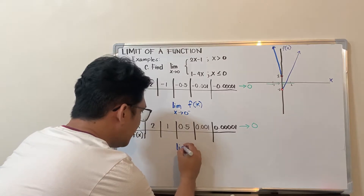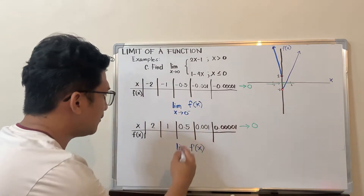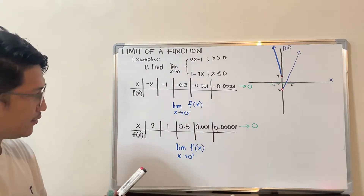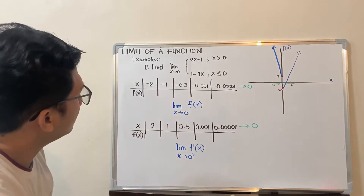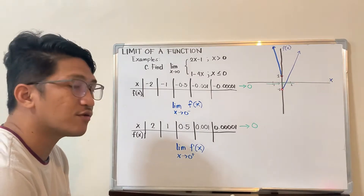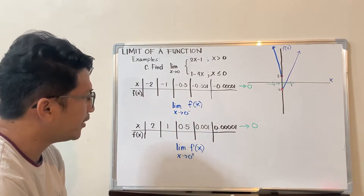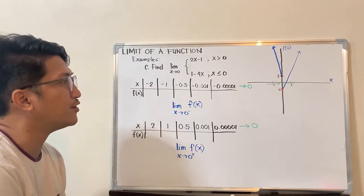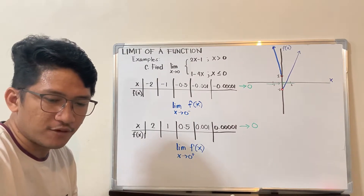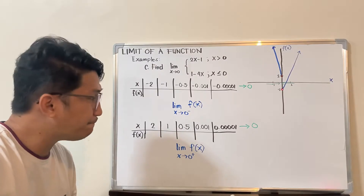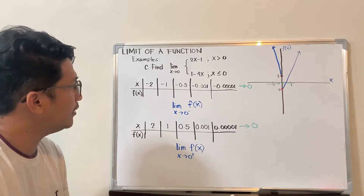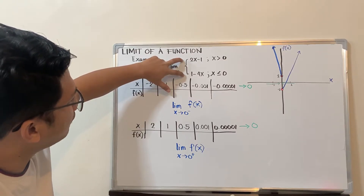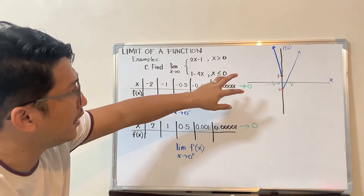There is no need to indicate all these notations; I am writing everything for the sake of discussion. The solution is actually shorter. What is very crucial is identifying which function to use. Both functions in this piecewise are linear, meaning their graphs are lines — but each is restricted to a certain domain. One is restricted for numbers greater than 0, and the other is used for numbers less than or equal to 0.